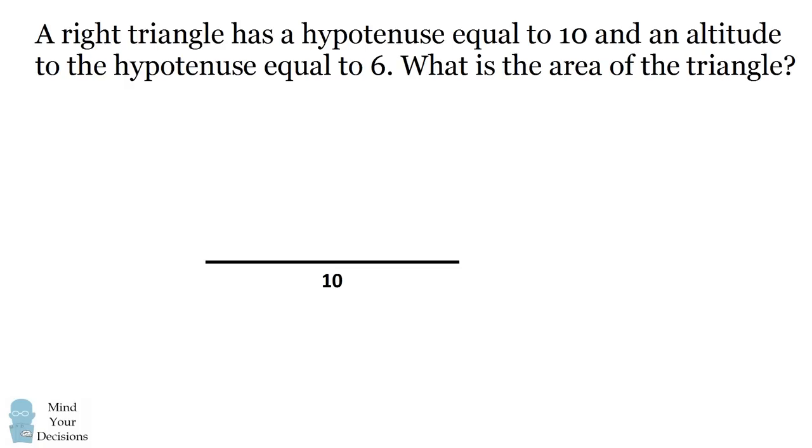Imagine we have a hypotenuse equal to 10. If the two endpoints of this line segment make up two points of the triangle, we want to know where can we draw a third point, where can the third vertex be to make a right triangle. Now not every point will make a right triangle, but some points will form a right triangle. So we want to figure out the locus of points where we can place the third vertex to make a right triangle.